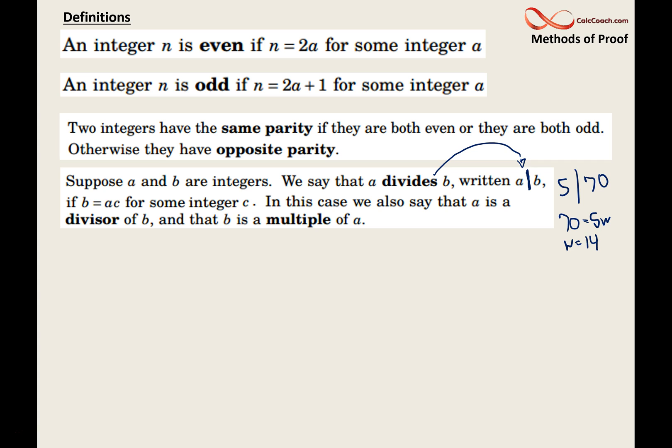And then the a in this, the number that's on the left of the divides bar, is called a divisor. Or you might have heard it called a factor. The number b, the number that's after the division bar, 70 in our example. What we say about that is that 70 is a multiple of 5. b is a multiple of a.